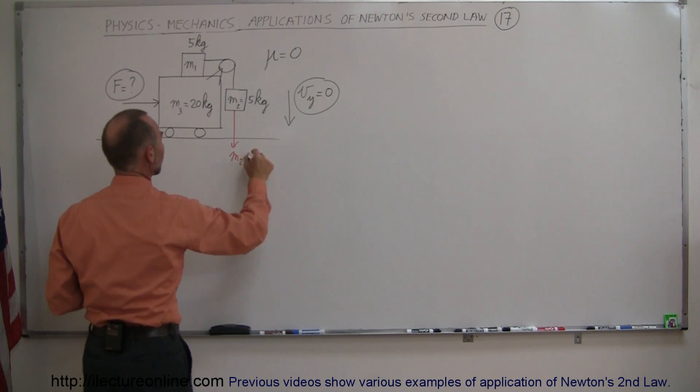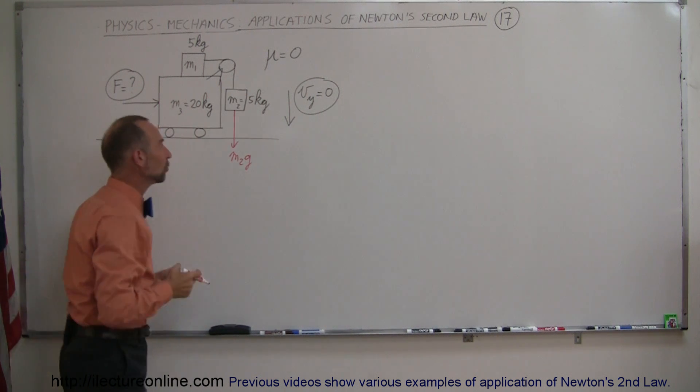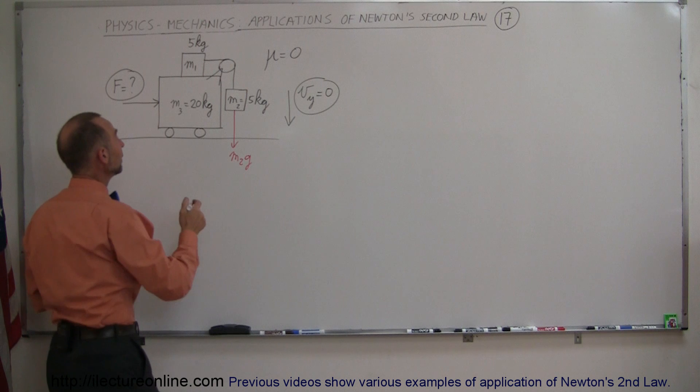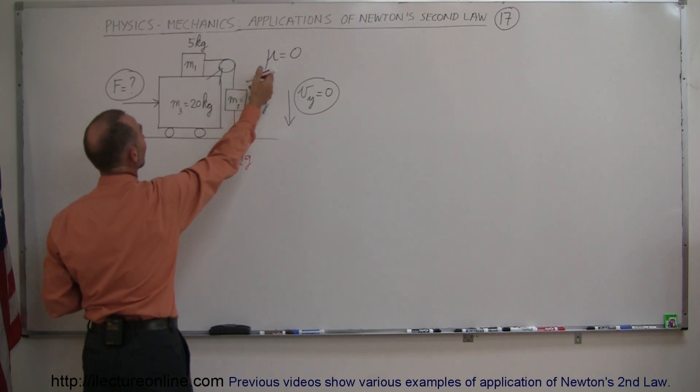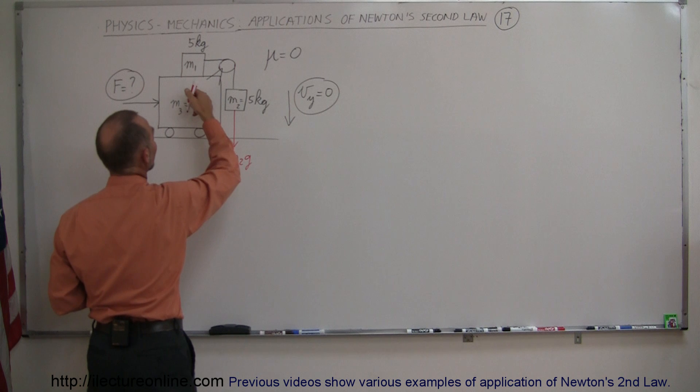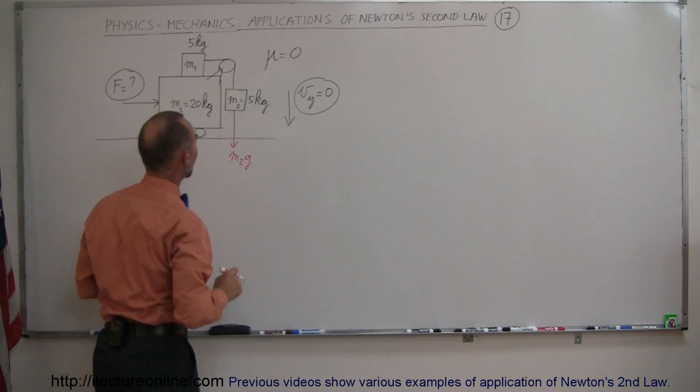Because when you look at it, the only thing that's pushing on M2 is the weight. So M2 is M2G. The weight of M2 is pulling M2 down and the only thing that can stop is M1. But since there's no friction between M1 and this block right here, you'd expect this block to accelerate forward.